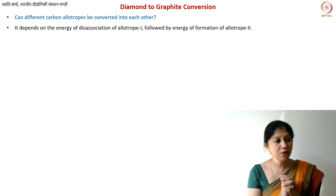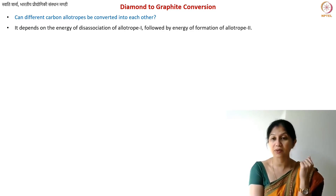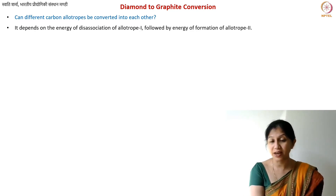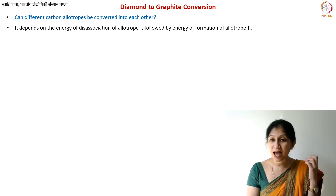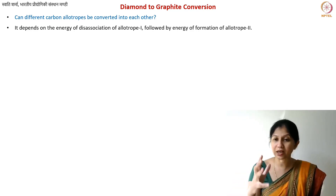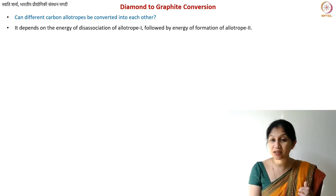Now, if you want to convert one allotrope into another, what are the two types of energies required? You need to provide some energy. As you've learned in previous lectures, diamond is a metastable form of carbon — metastable means it is not the most stable form. Naturally it should at some point convert into graphite; however, there is an energy barrier. You need to provide an activation energy, and once that is provided it will cross that barrier and convert into graphite.